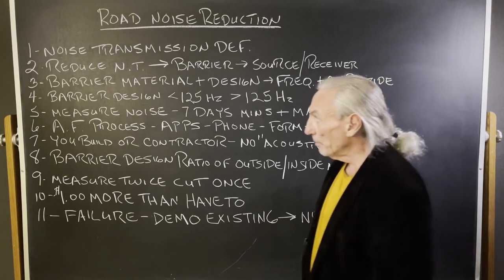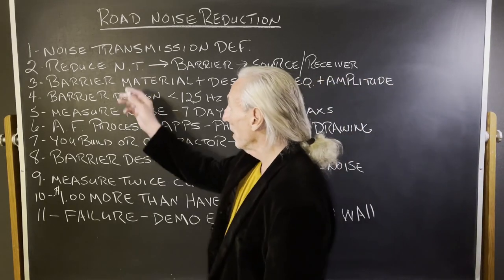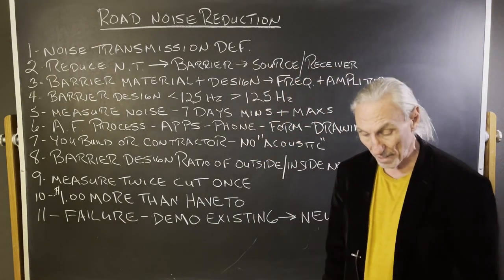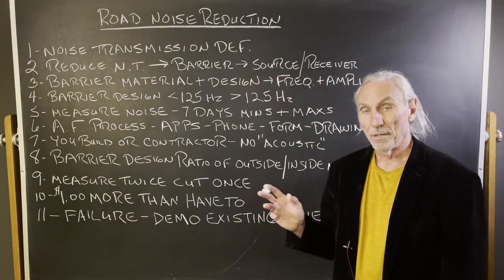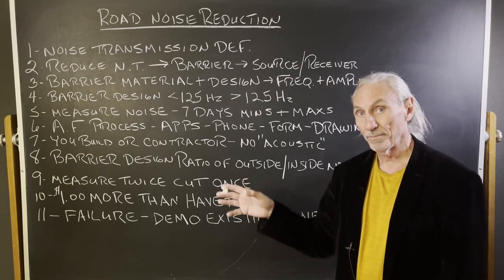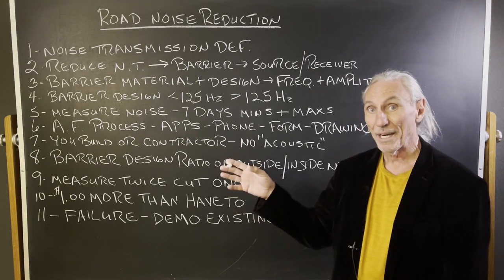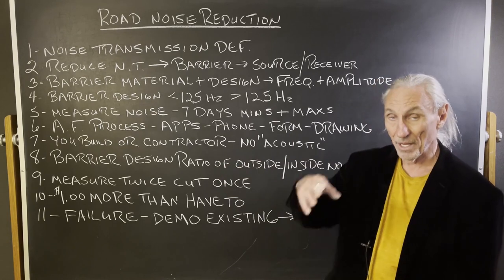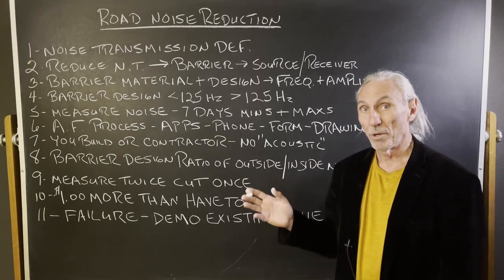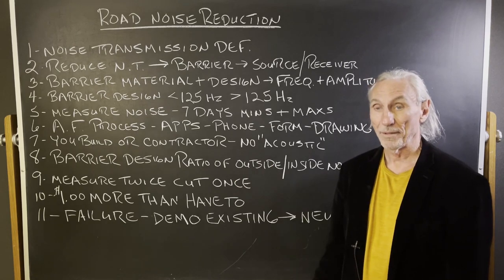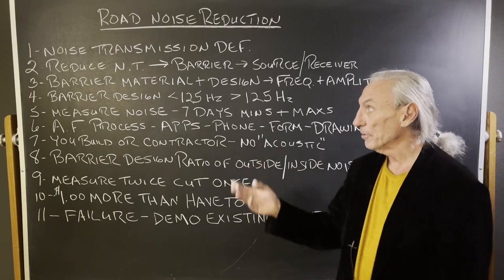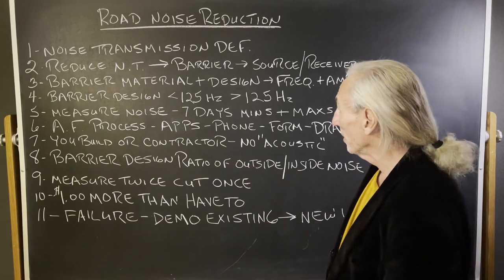So how do we reduce noise? Let's first talk about noise transmission. If you're in a room, it's the sound leaving the room and bothering others. If you're not in the room, it's outside sound coming in and bothering you. Road noise is one path of that. There's also room noise that leaves — those are the two ways it works.